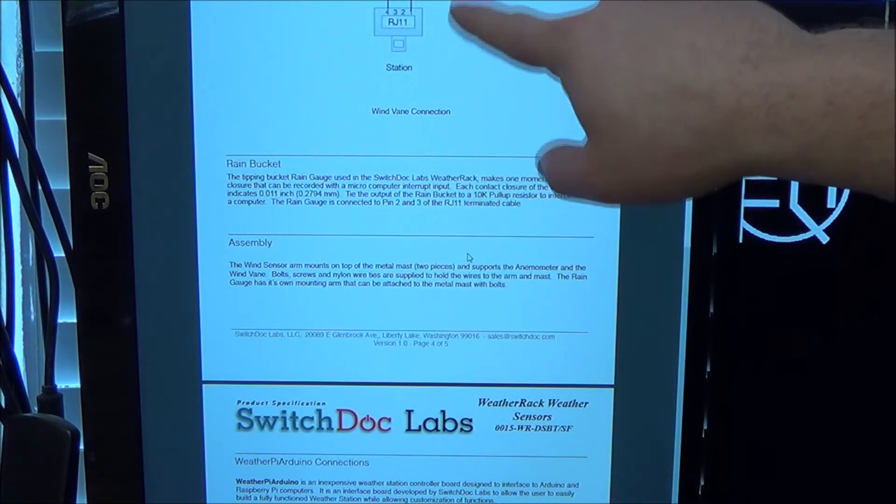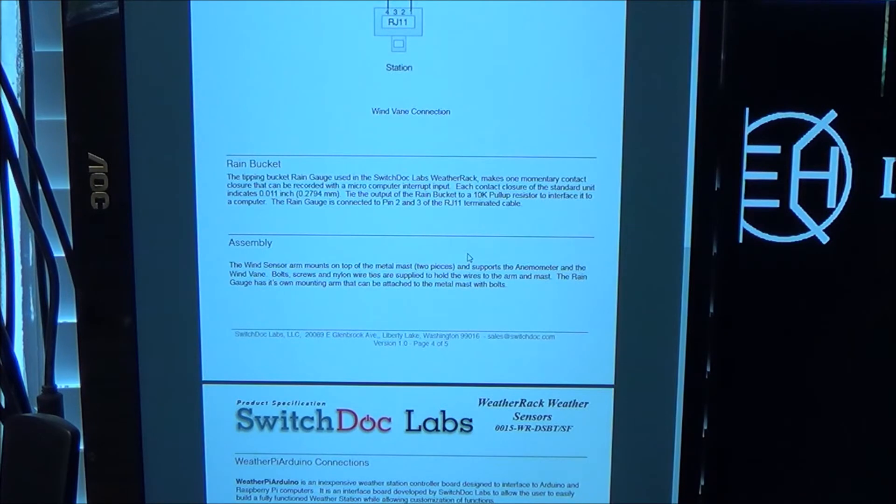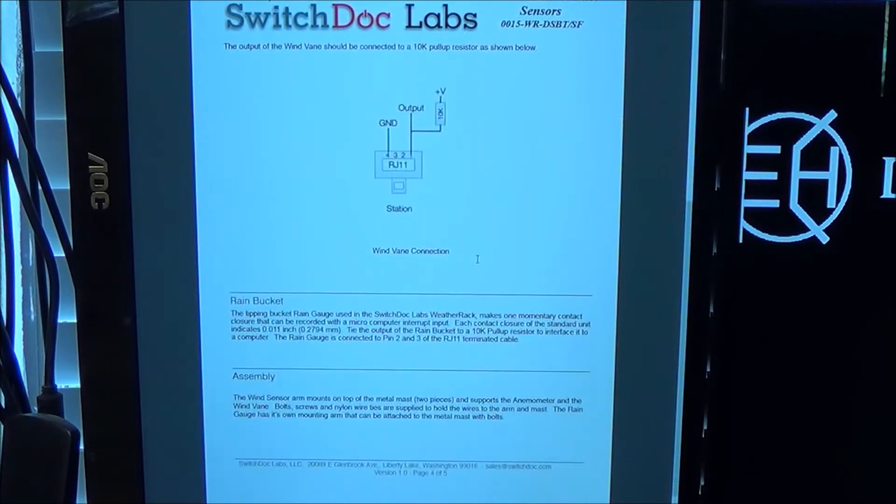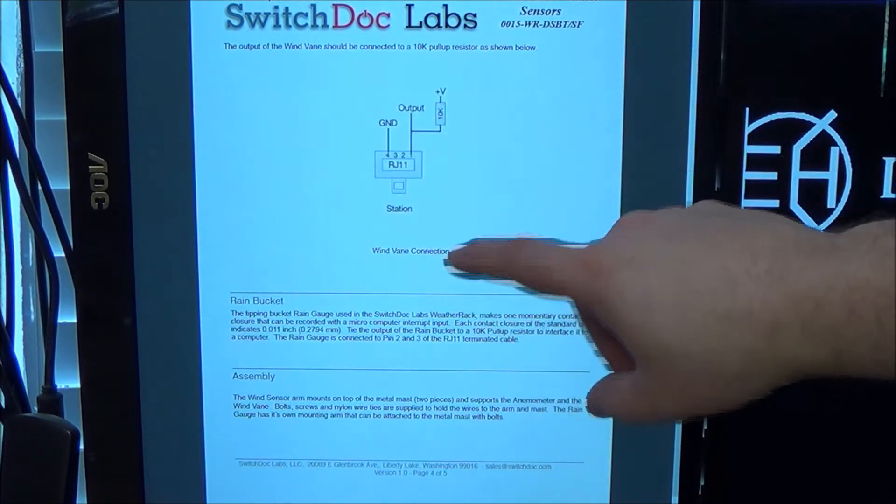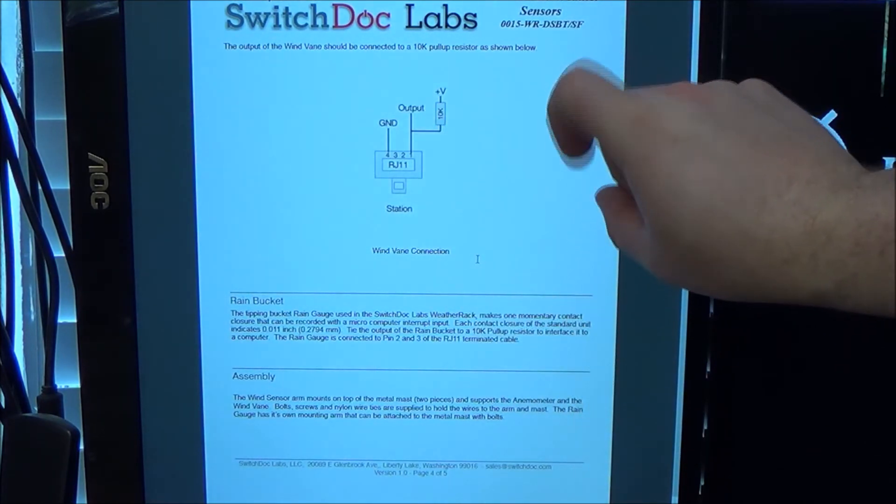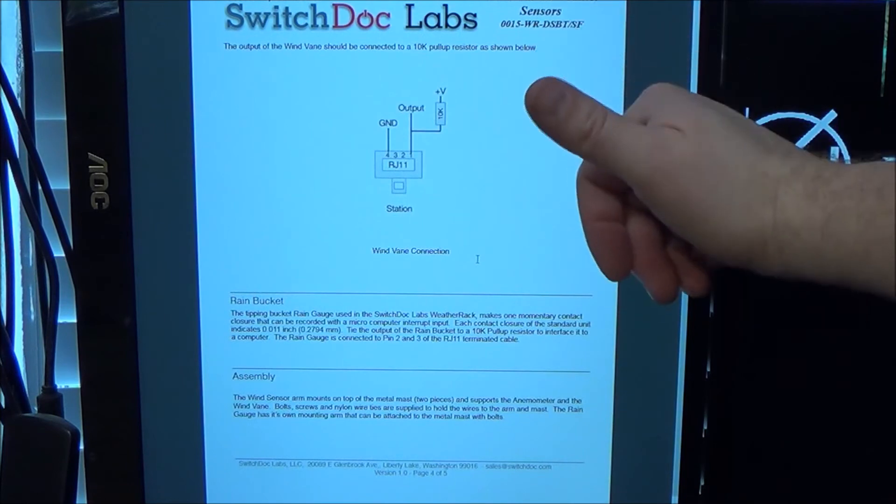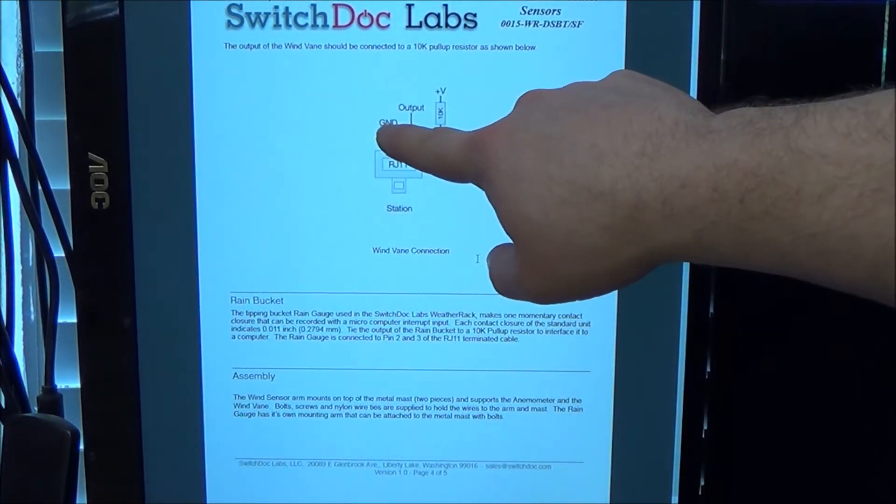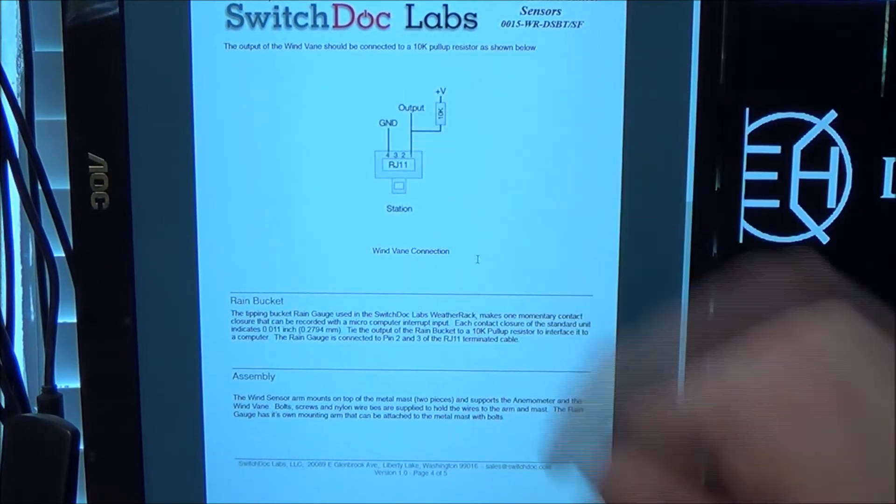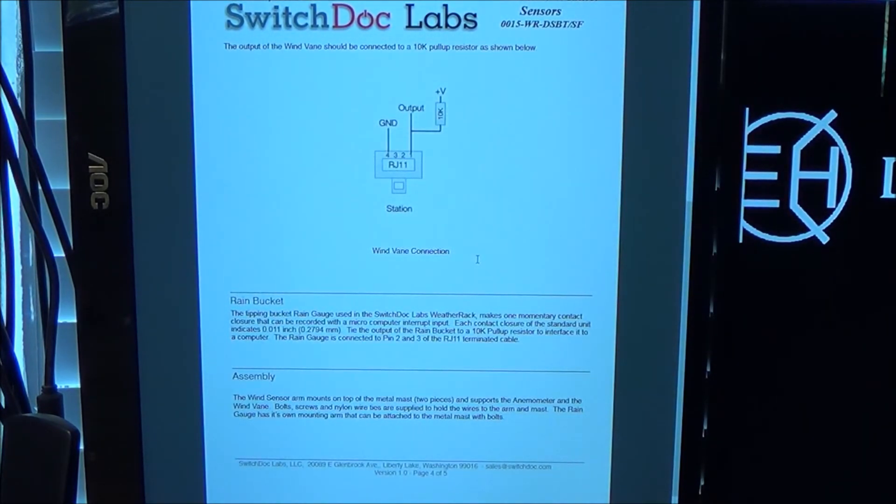This is a little deceptive. I thought that I needed to put a 10K ohm resistor on there. But really, this is done internally. The Arduino, in the library, it pulls it up. So all you have to do is hook ground up and then hook the output up to whichever pin you select.